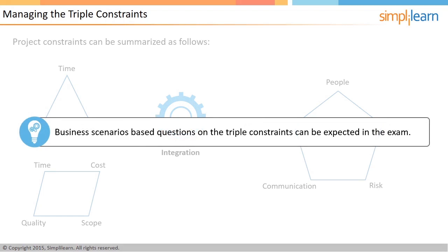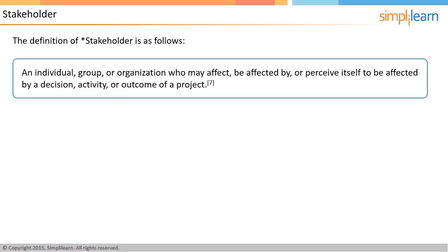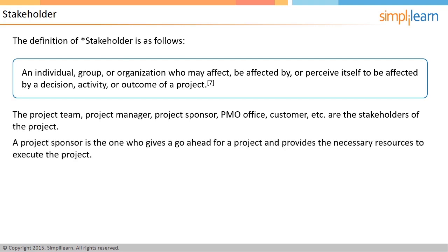A stakeholder can be defined as one whose interests may positively or negatively be affected, or perceived to be affected, by the decision, activity, or outcome of the project. The project team, project manager, project sponsor, PMO office, and customer are all stakeholders of the project. A project sponsor is the one who gives a go-ahead for a project and provides the necessary resources to execute it. The head of projects in the organization who provides a green signal to start a project is the project sponsor, and they are usually placed high up in the organizational hierarchy.